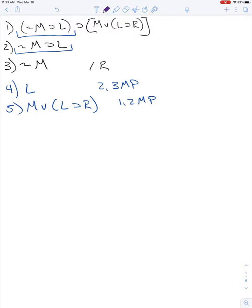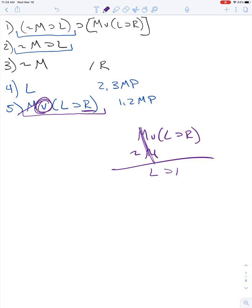Okay, so now I'm in a situation right down here where I have as a main operator a wedge. Now the only way I can split these two apart and try to get this R by itself is I need to get rid of this M. The only way that's going to work is if I have a not M. So what happens here is the M and the not M cancel each other out, and then you end up with L to R. So that would be the next line, so we're going to end up with L to R with three and five, DS.